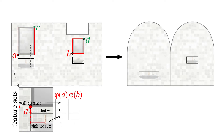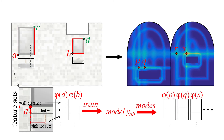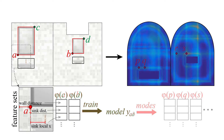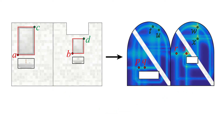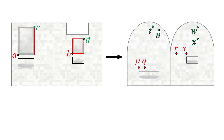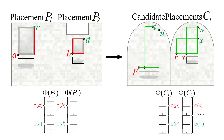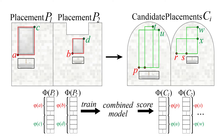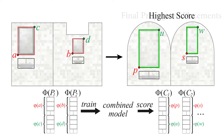To find points with similar features, we train a probabilistic model on the examples. The modes of this model correspond to points with similar geometric relationships. One model is trained for each sample point. Pairs of propagated lower left and upper right corner points are used to construct candidate placements. These are ranked using a combined model that incorporates the features of all sample points. Candidates with the highest score are used as the final output placements.